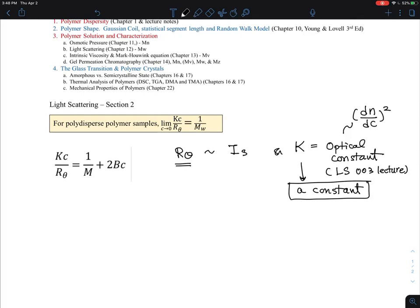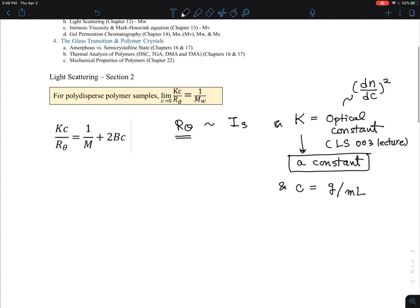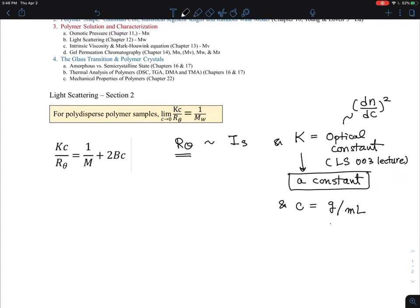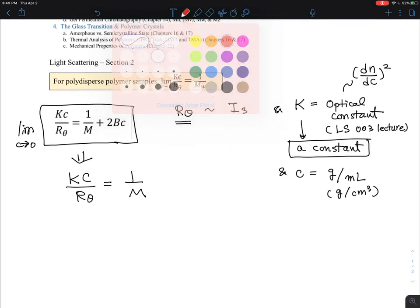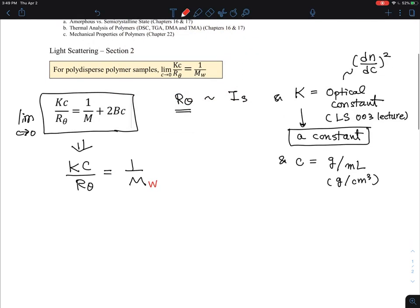And what is c? c is gram per milliliter polymer concentration, grams per cubic centimeter. How should this equation be understood? In the limit of concentration going to zero, this equation simplifies to Kc over Rθ equals 1 over M. We want to know how this M turns out to be Mw.